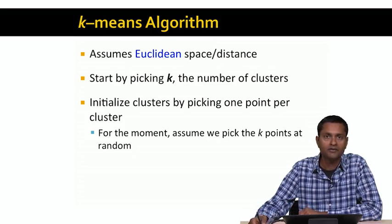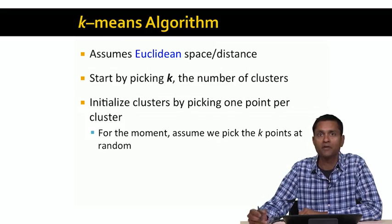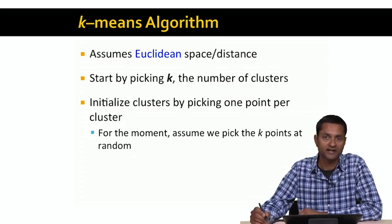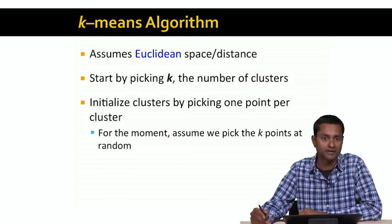We're going to initialize our k clusters by picking one point per cluster. For example, we could just pick k points at random and assign one point to each cluster. That would be one way of picking the points. Later on, we'll examine other ways of doing this much better.